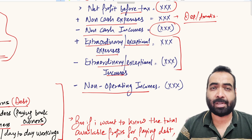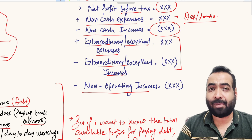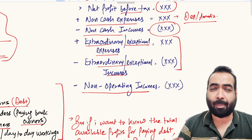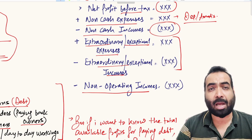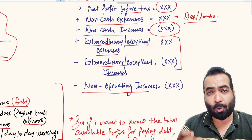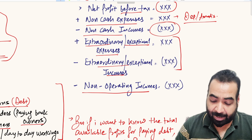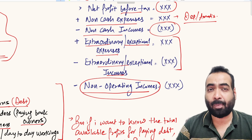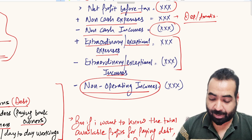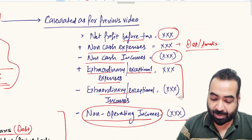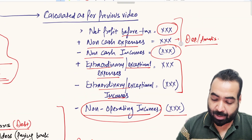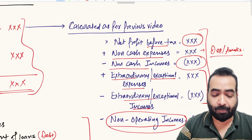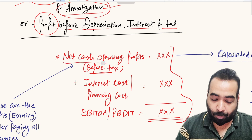Additionally, non-operating incomes should be deducted. As explained in the previous video, normal profits and operating profits are slightly different. When calculating EBITDA for core business operations, we need to deduct non-operating incomes as well. This was the same formula discussed previously for calculation of net cash operating profit before tax.